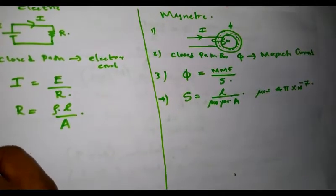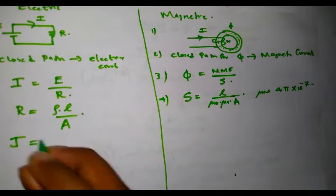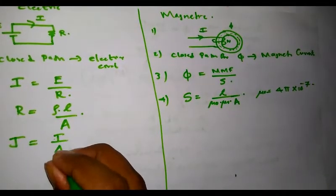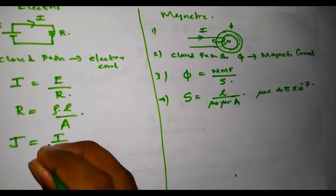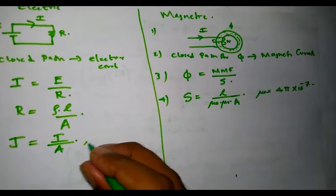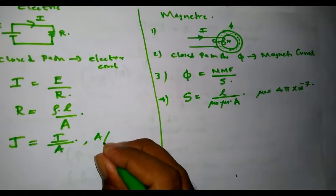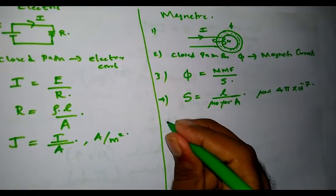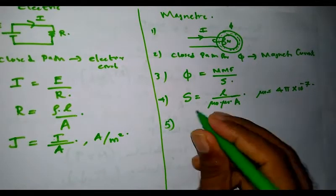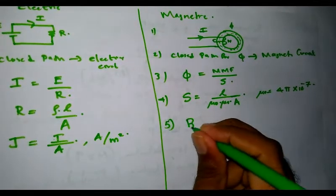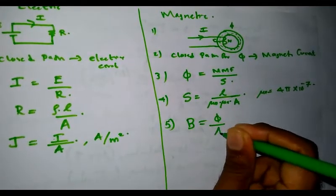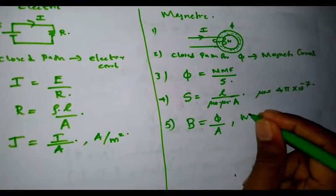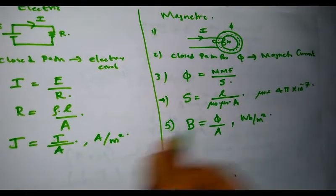In an electric circuit, current density J is equal to current divided by area, and its unit is ampere per meter square. Similarly, in a magnetic circuit, magnetic flux density B is equal to flux divided by area, and its unit is Weber per meter square or Tesla.